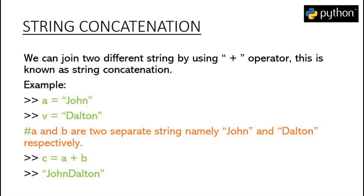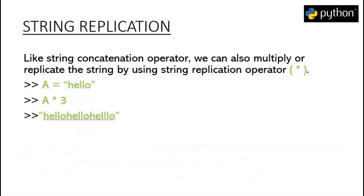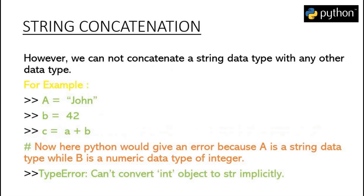Similarly, we can also perform string replication. If we want to repeat any string multiple times, we multiply the string by a number. For example, if we want to repeat the string 'hello' three times, we multiply our string by 3 and we get the string repeated three times. One important thing to note about string concatenation is that only two strings of the same data type can be concatenated. If the data types are not the same, string concatenation will give us an error.